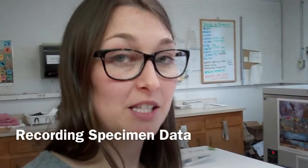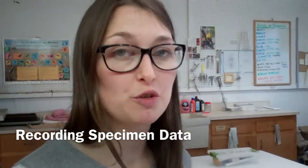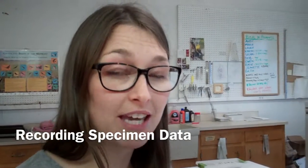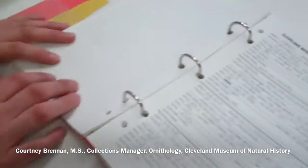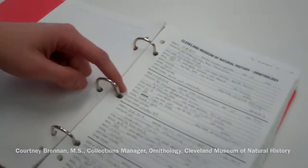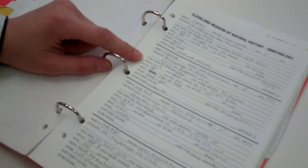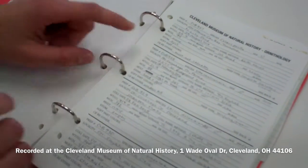We want to make each of our specimens as valuable as possible, and we do that by taking as much data as we can for each bird that we prepare. All of that information gets jotted down into our prep books. You can see each section and get an idea of all the information that we're gathering from each bird.